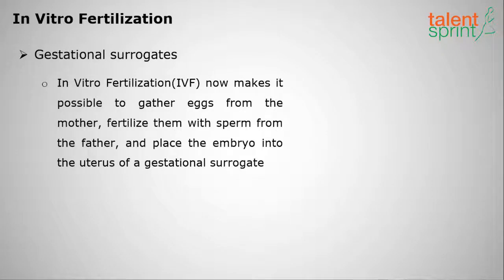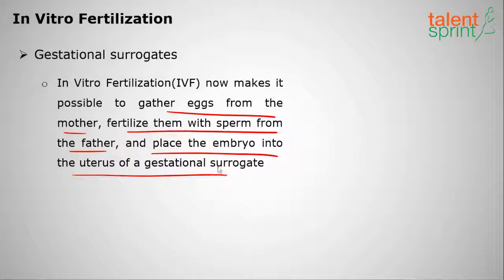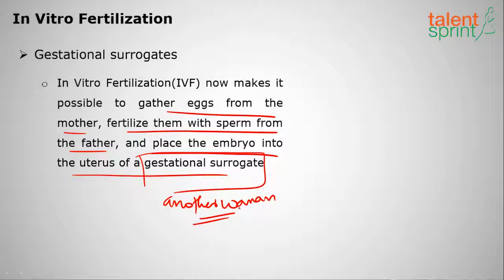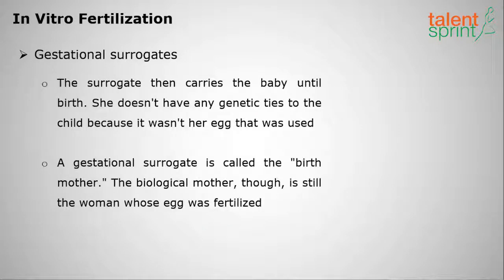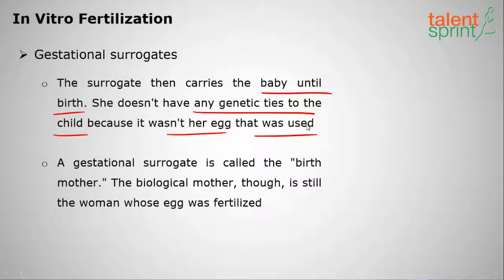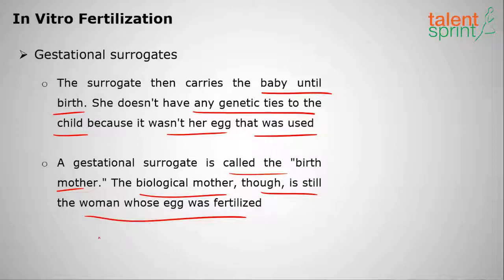IVF also makes surrogacy possible. In gestational surrogacy, eggs from the biological mother are fertilized with sperm from the father, and the embryo is placed into the uterus of a gestational surrogate — another woman. The surrogate carries the baby until birth but has no genetic ties to the child, as it was not her egg. The surrogate is called the birth mother, while the biological mother is the woman whose egg was fertilized.